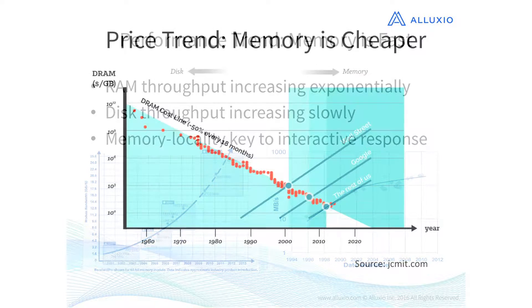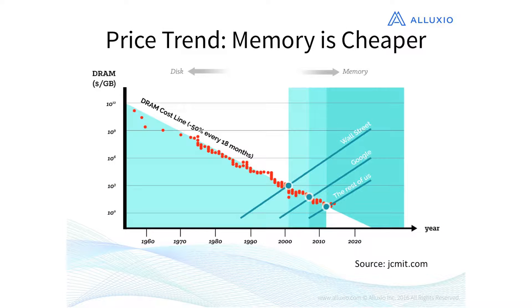Looking at price, DRAM price decreased by half every 18 months. As a result, in the early 2000s, firms from Wall Street started to leverage DRAM technology aggressively. Then around 2010, companies like Google and Baidu started to have their in-memory cluster computation. Now around 2015-16, people are leveraging DRAM technology more broadly, and a technology like Spark — an in-memory computation framework — has taken off.